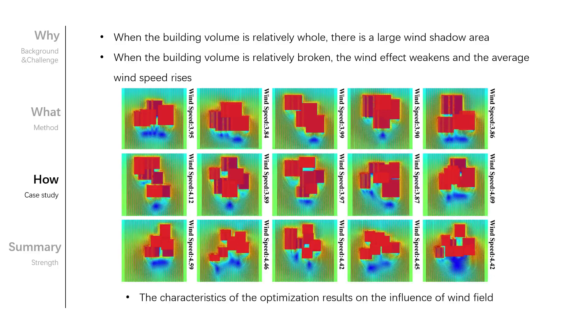For the characteristics of the optimization results on the influence of wind field, we can see that for S2, when building volume is relatively high, there is a large wind shadow area. When the building volume is relatively broken, the wind effect weakens and the average wind speed rises.